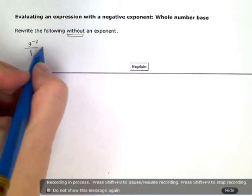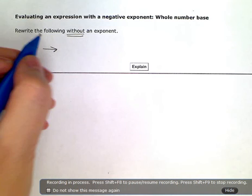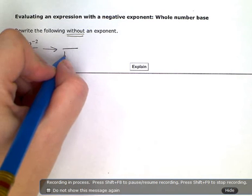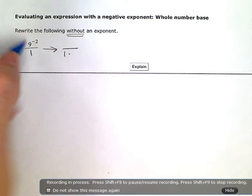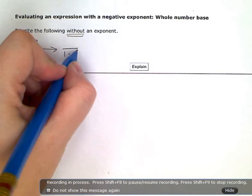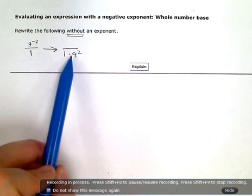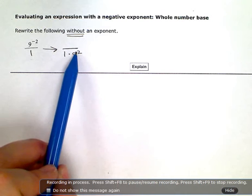So I could rewrite this and put the 9 in the denominator. And now it's happy in this neighborhood, so we can take off the negative and just write it as a positive.